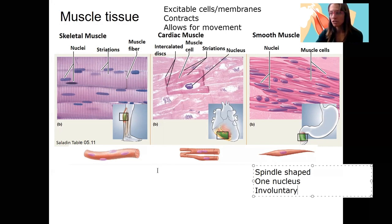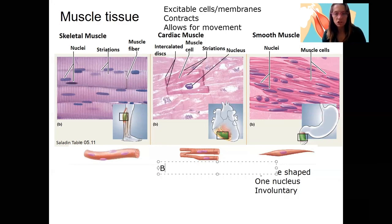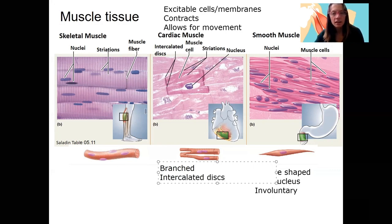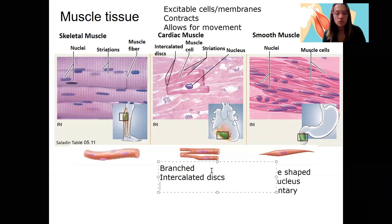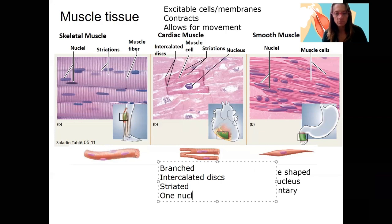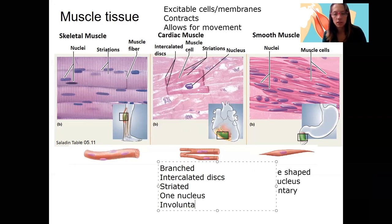Cardiac muscle is located in your heart. It is branched tissue, which is important for how the heart contracts as a unit. It also has intercalated discs with gap junctions that allow electrical signals to pass from one cell to the next. When you study the heart, remember these cells are closely connected electrically via intercalated discs. Cardiac muscle is also striated — you can see stripes — has one nucleus per cell, and is involuntary.